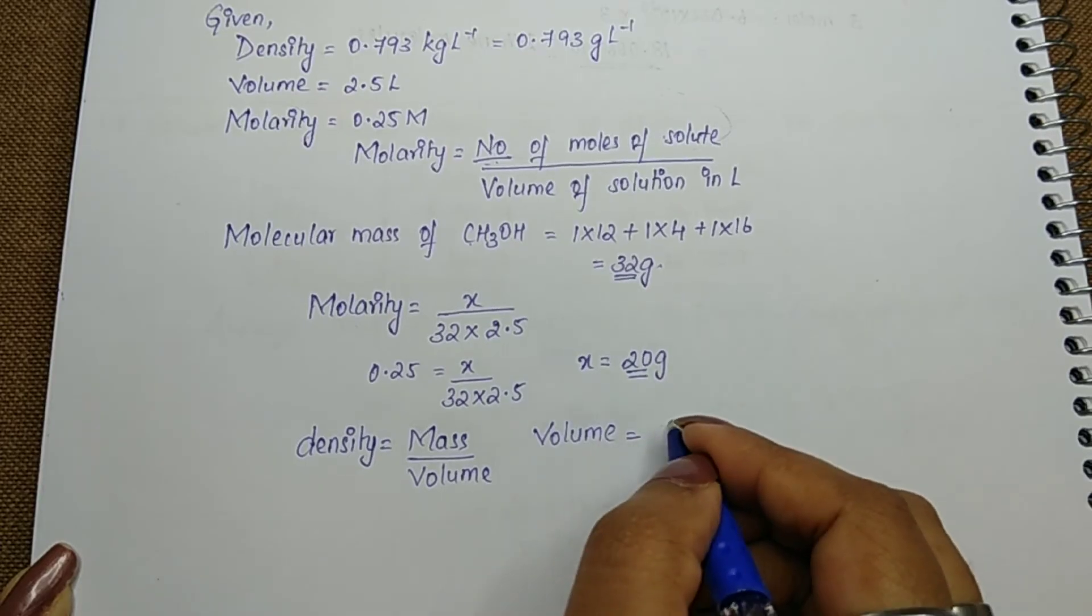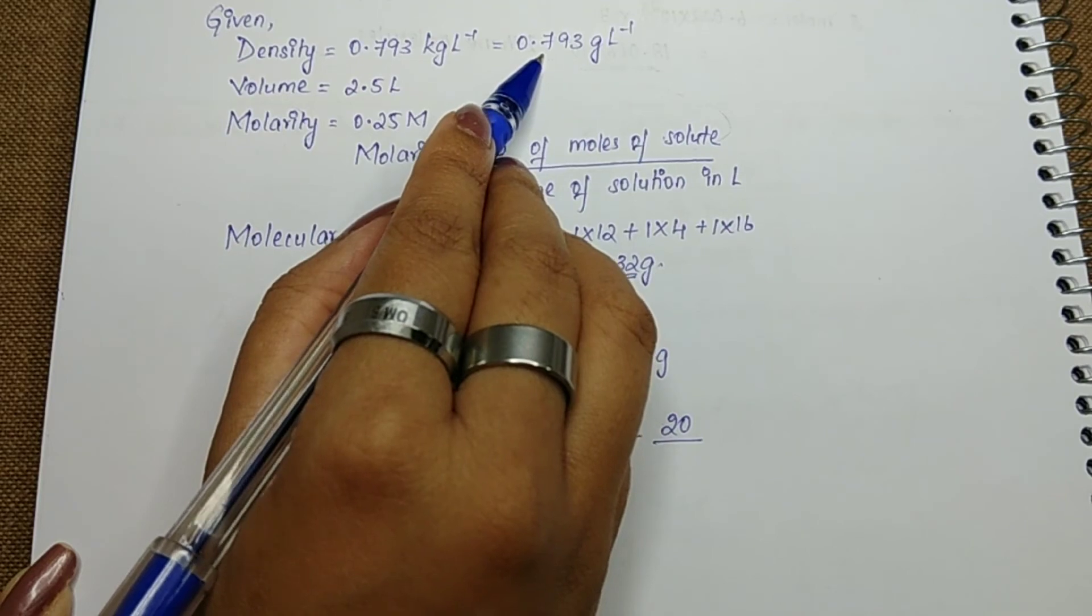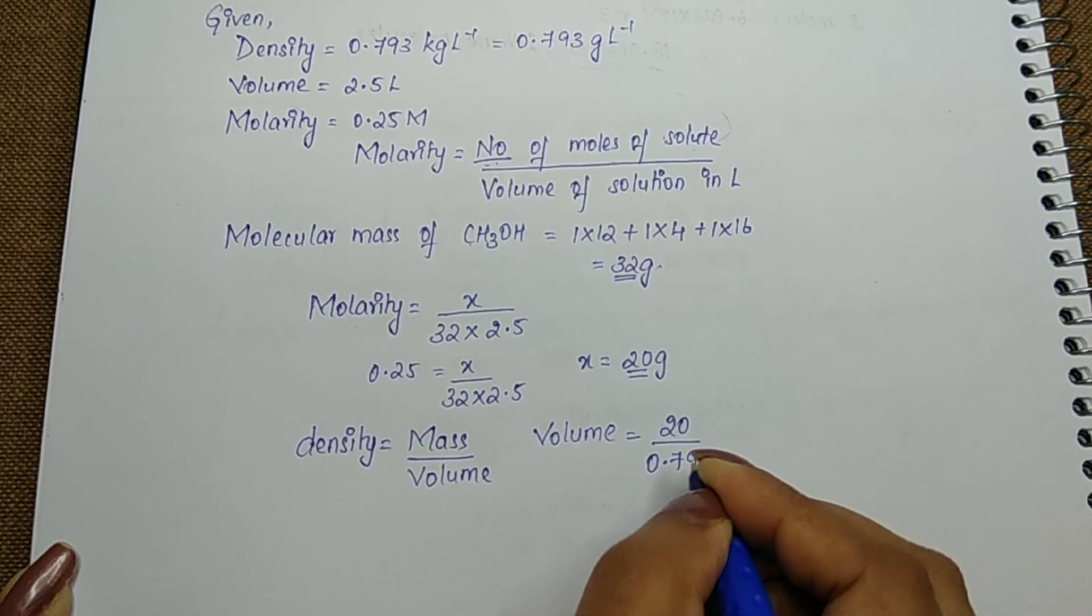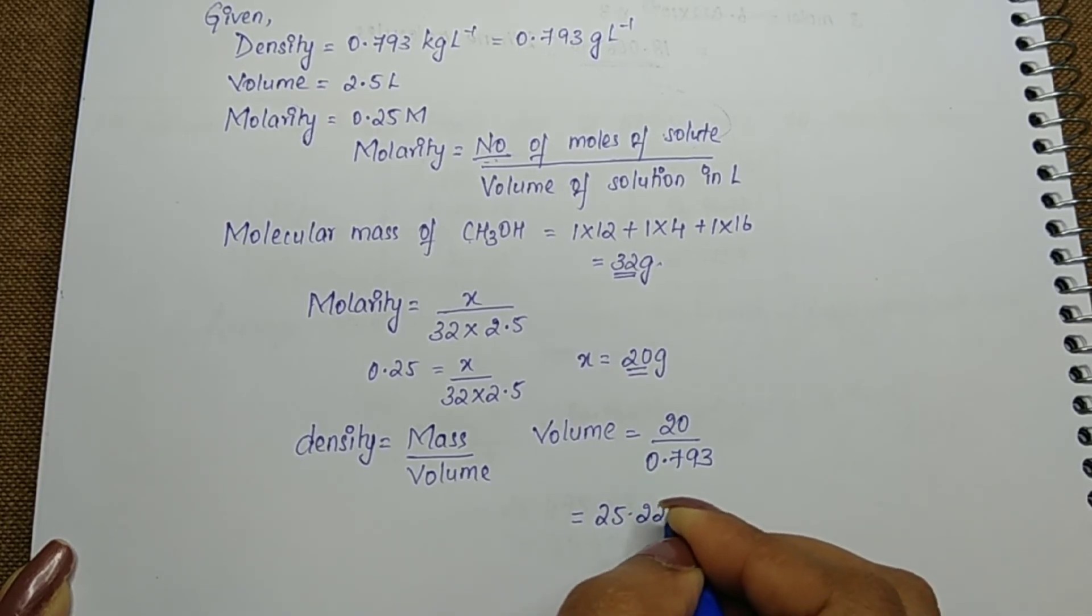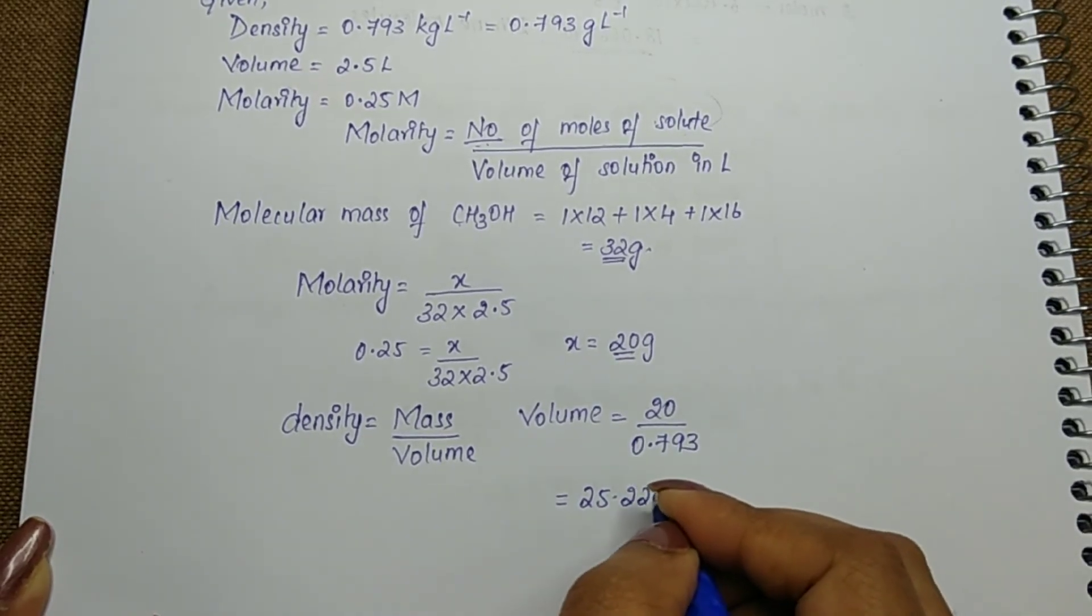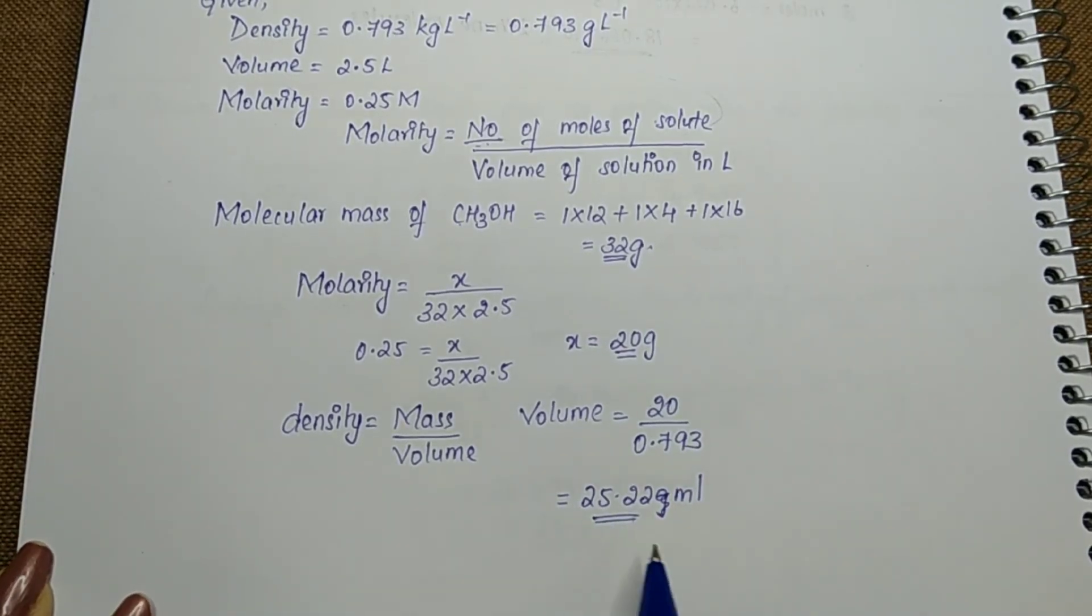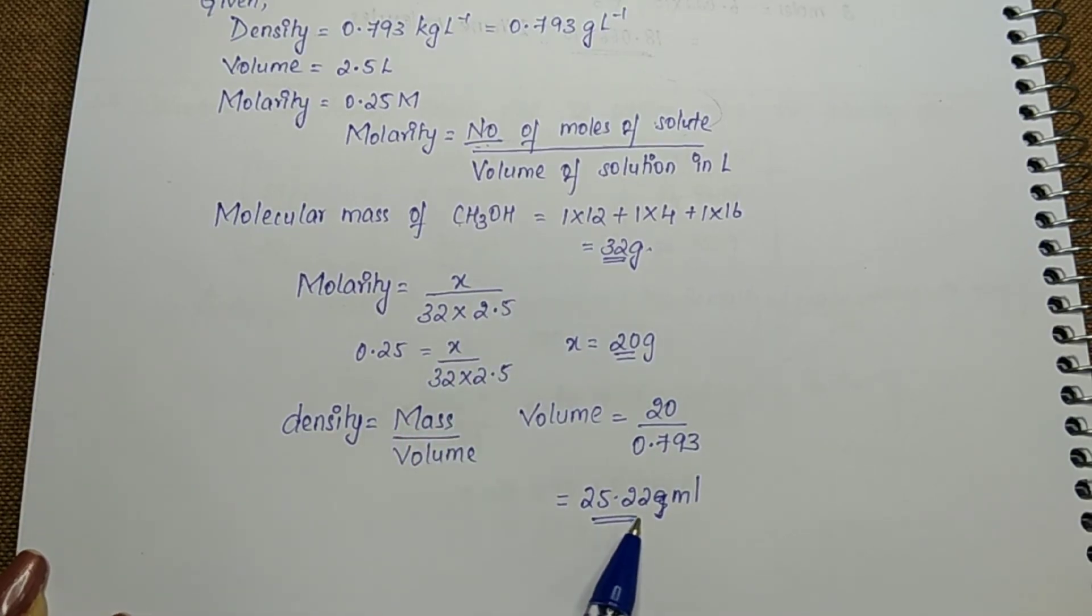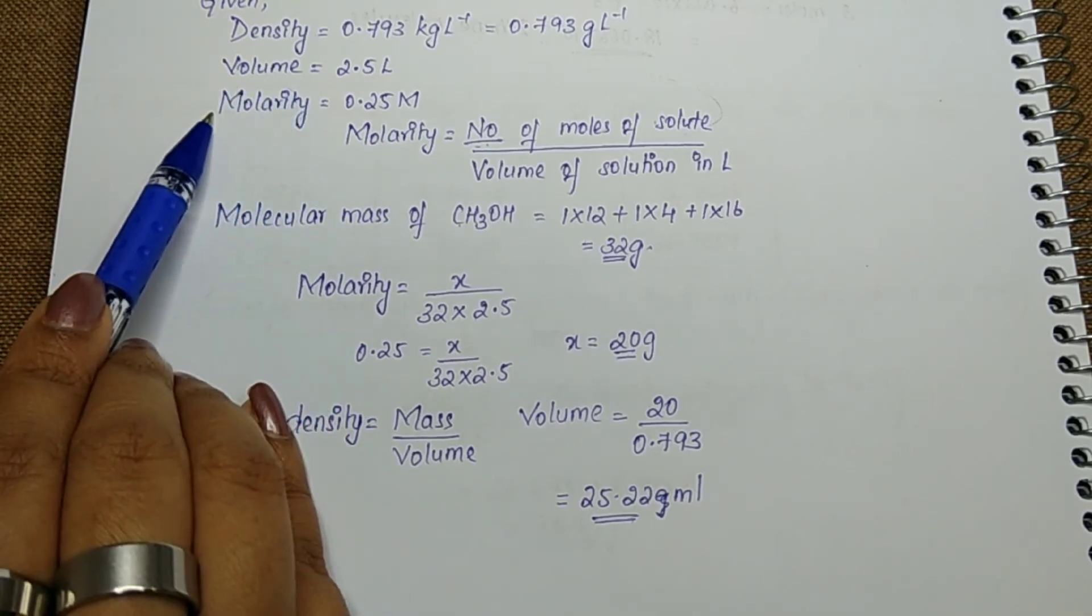Volume equals mass, 20 grams, divided by density, 0.793 grams per ml. When we substitute this, we get 25.22 ml of methanol.